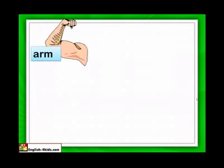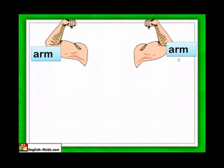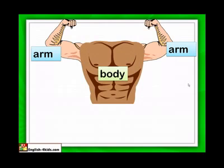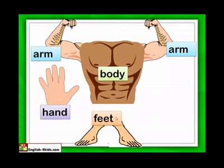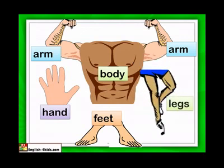Let's look at other parts of the body. That's the arm. Arm. That's another arm. Arm. Two arms. And the body. Hand. Hand. Feet. Leg.